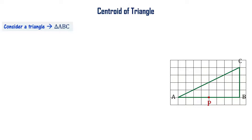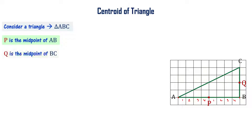Now, let me mark point P on side AB. We have marked point P, which is 4 units from each end — P is the midpoint of AB. Similarly, I can mark midpoints for the other two sides. Let me mark Q as the midpoint of BC, and another point R as the midpoint of side AC.